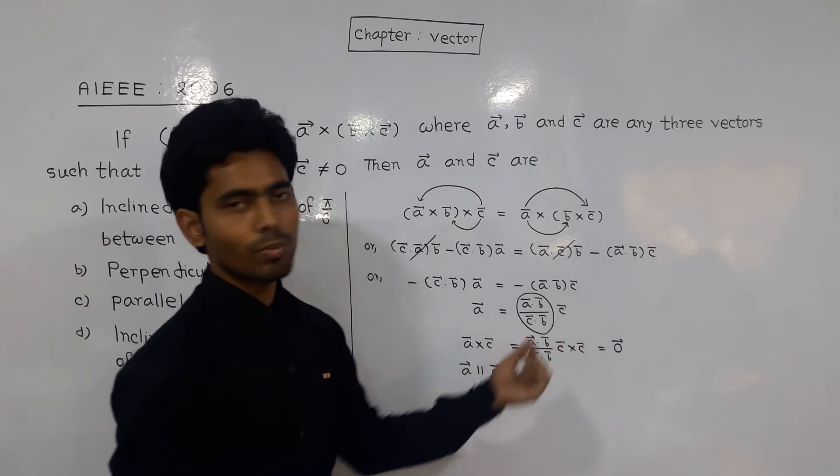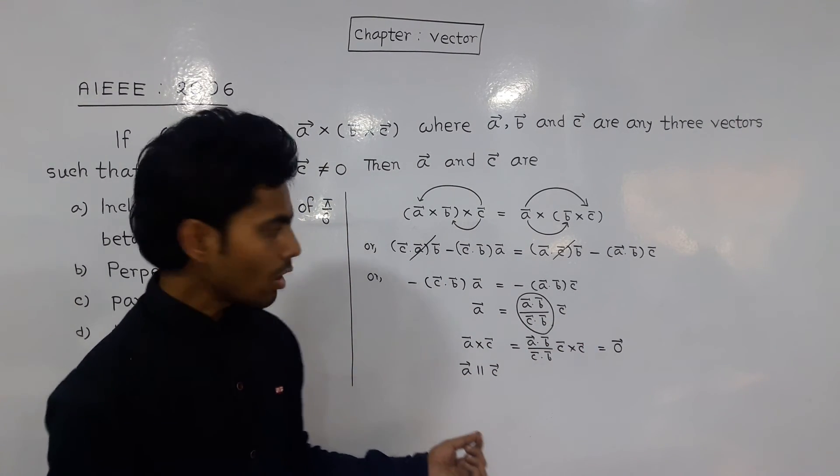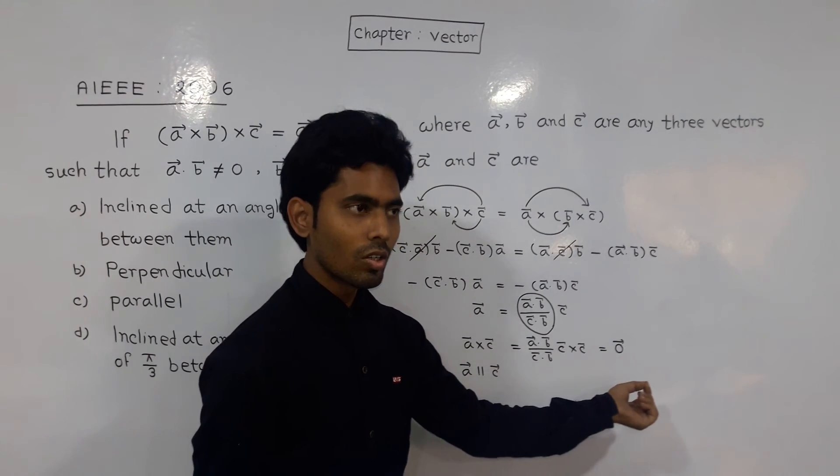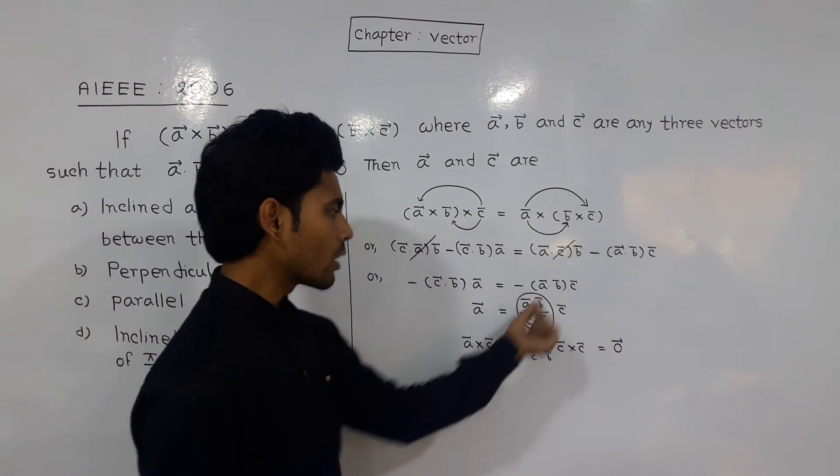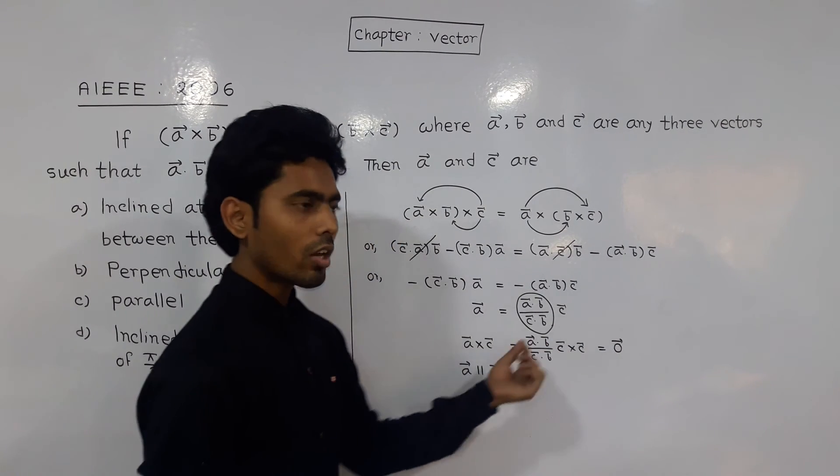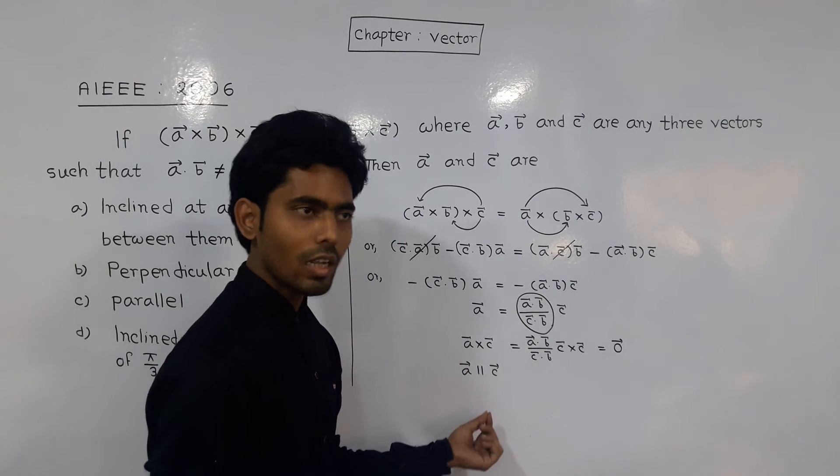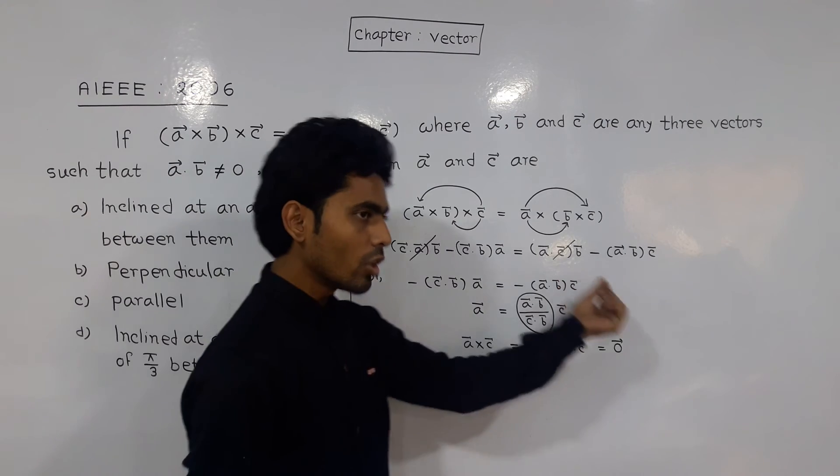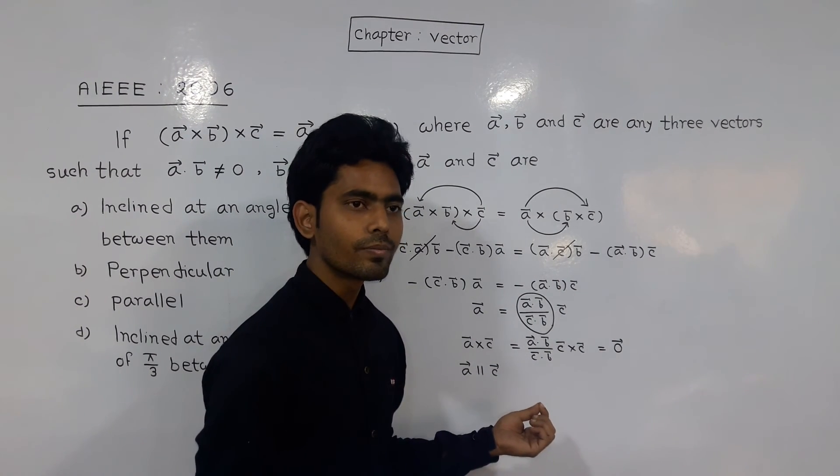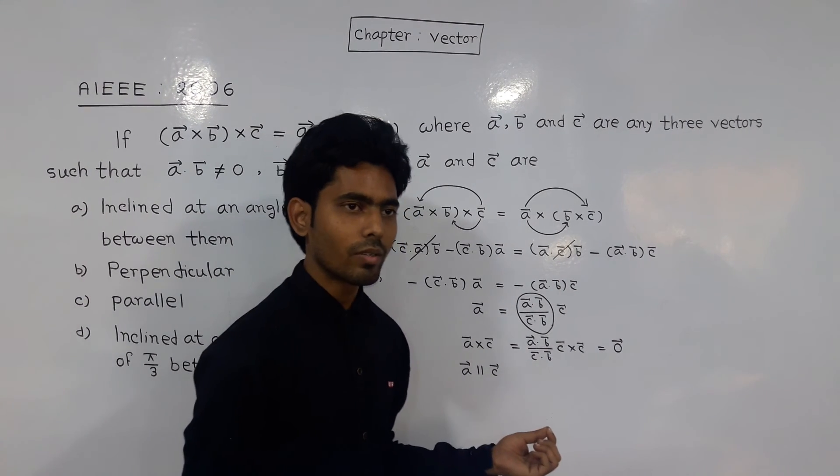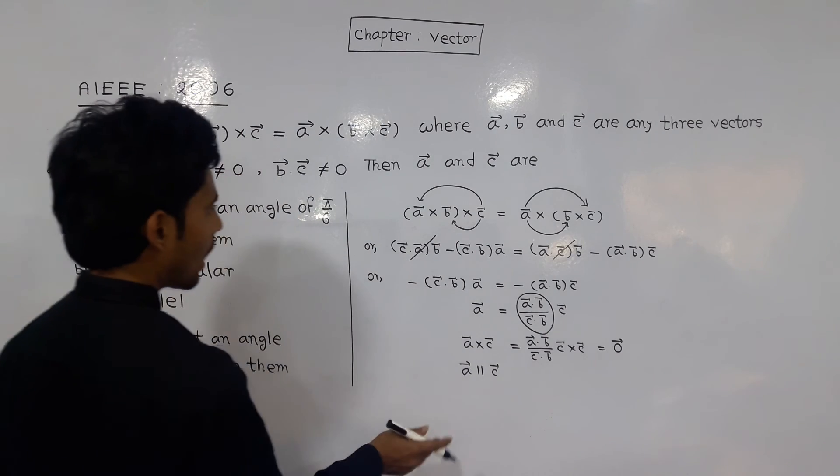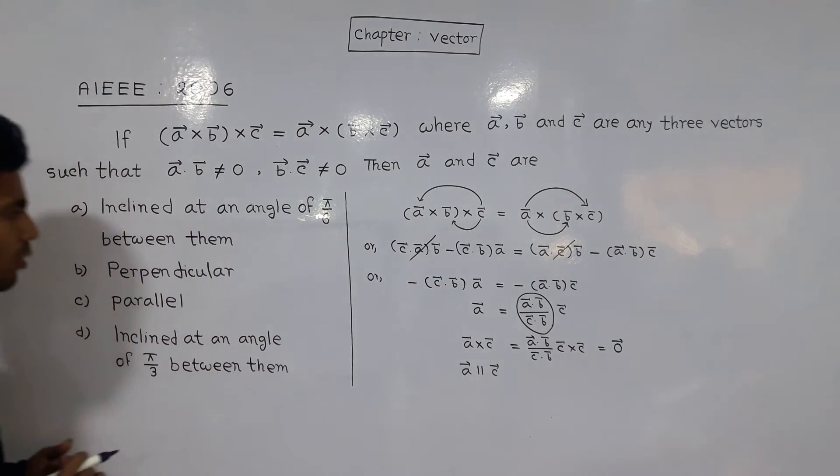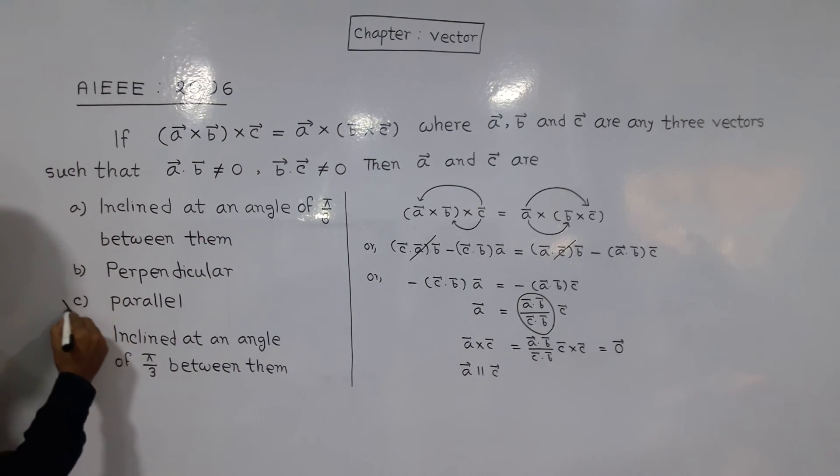When the cross product equals zero vector, the vectors are parallel. Dot product zero means perpendicular, but cross product zero means parallel. So option c is correct.